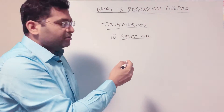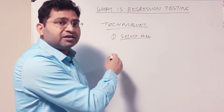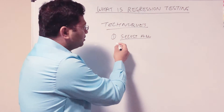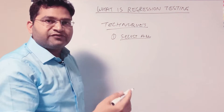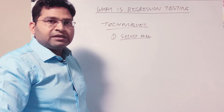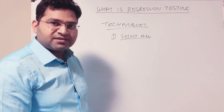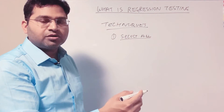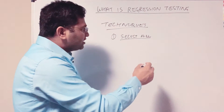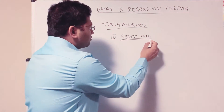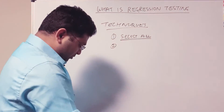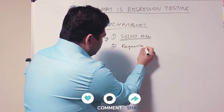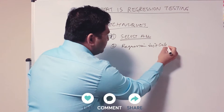However, selecting all test cases is highly unlikely to be practical unless you have a 100% automated regression test suite. It would require a lot of manual testing effort to do a complete regression after each defect fix. For example, if by release 2 you have 100 test cases, with every defect fix you would have to re-execute all 100 test cases.